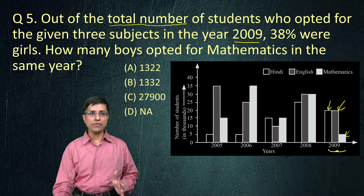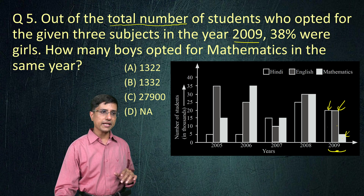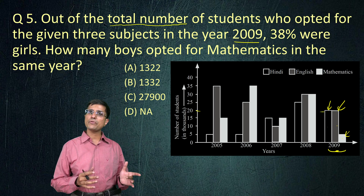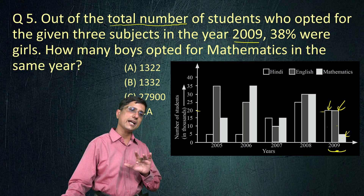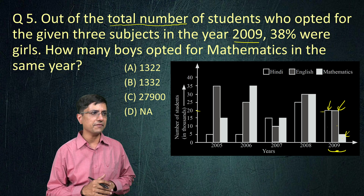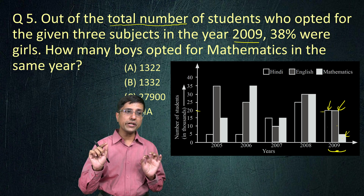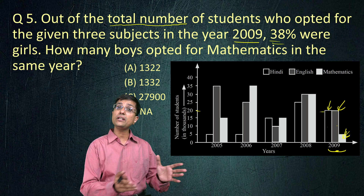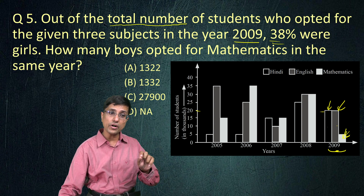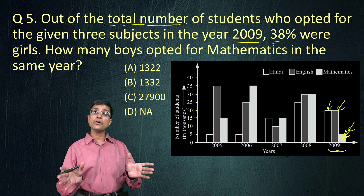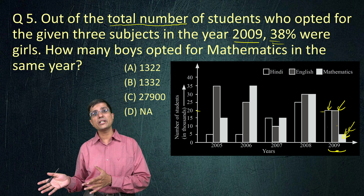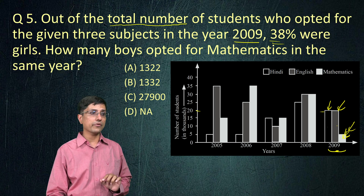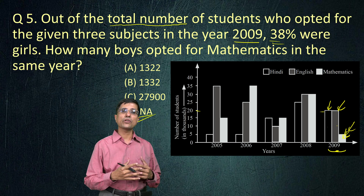The question tells us that in 2009, 38% of the total students who opted for the three given subjects were girls, and asks how many boys opted for mathematics specifically. However, notice: the percentage of girls has been given for the total, whereas the question asks about one particular subject. We cannot assume that just because 38% were girls in total, there will also be 38% girls in mathematics — there might be more or less. We have no data on that.